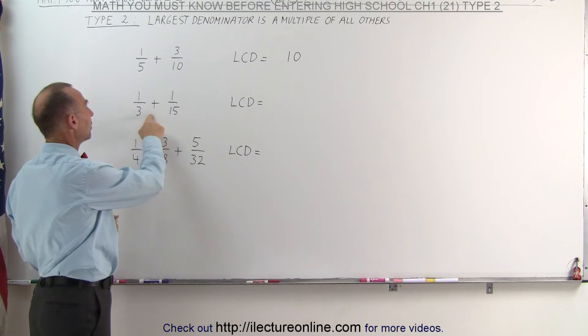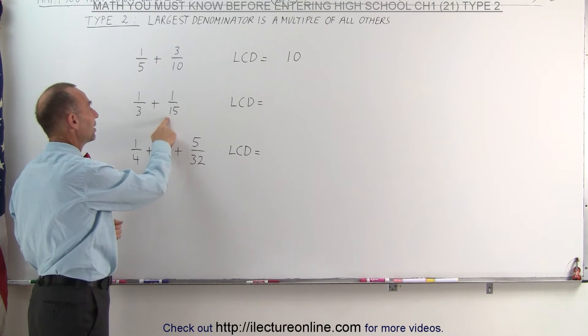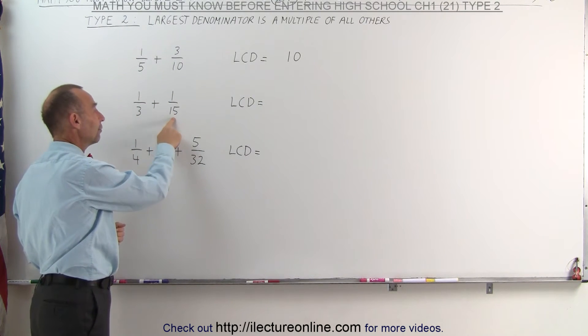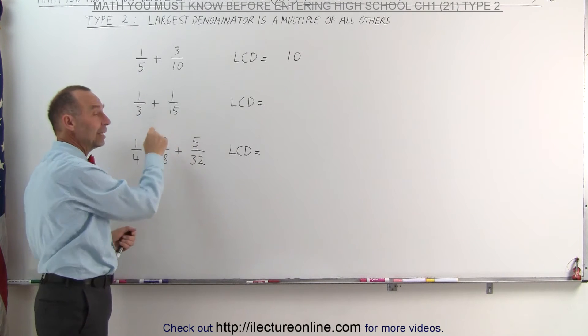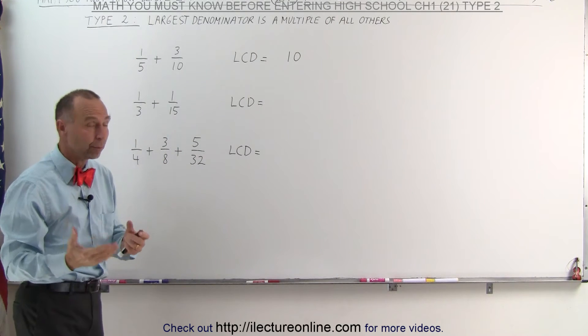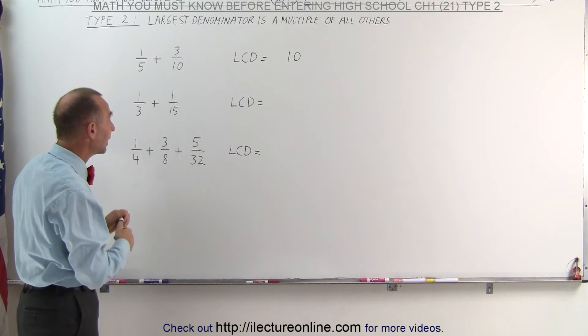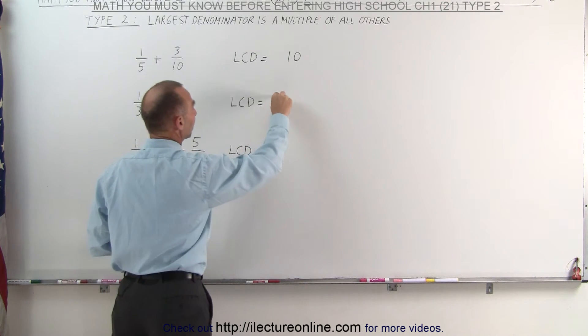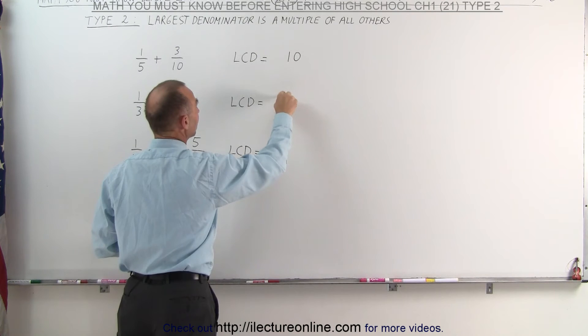Here again, you can see that 1 over 3 plus 1 over 15: 3 goes evenly into 15, so 15 is a multiple of the other denominators. The LCD simply becomes 15.